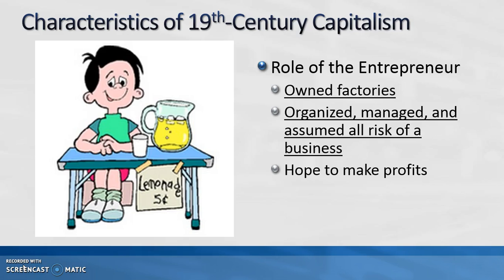Entrepreneurs play a very important role in the capitalist system. They are the ones who own the factories, organize, manage, and assume all of the risk of a business. If the business fails, they are the ones who lose their money. They take on this risk because they want to make profits.